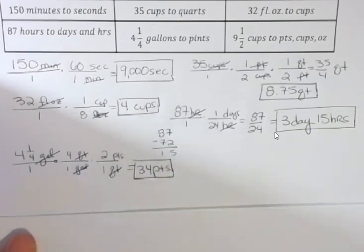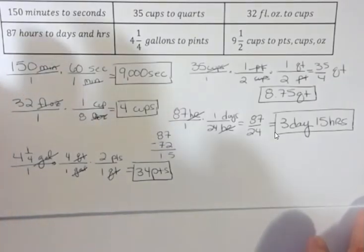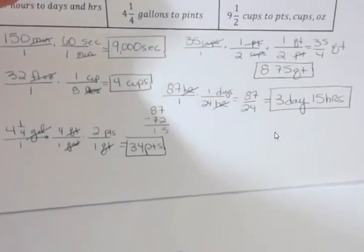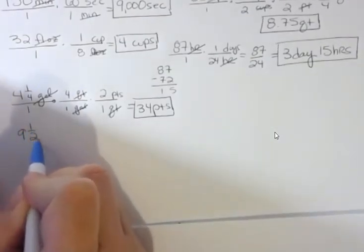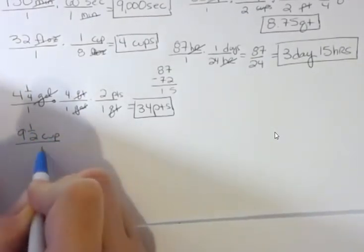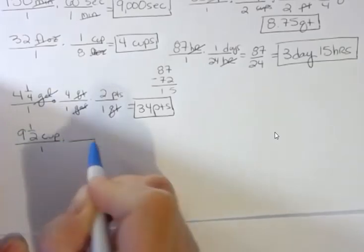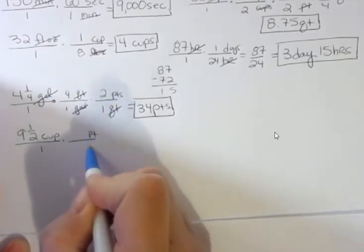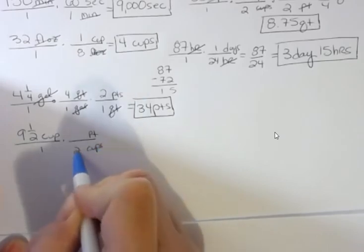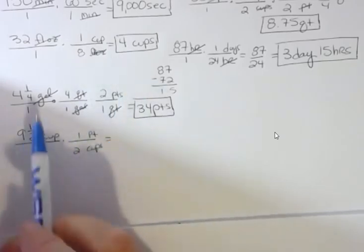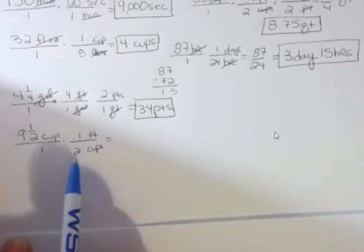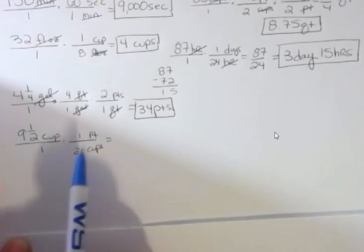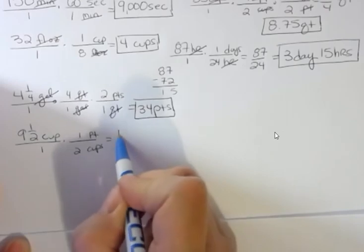Finally, I have nine and a half cups to convert to pints, cups, and ounces — that's a tricky one. Starting with nine and a half cups, I want to get rid of cups and go to pints. There are two cups in one pint, so I divide nine and a half by two. That works out to 19 over four.